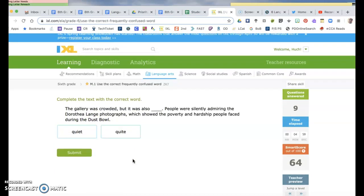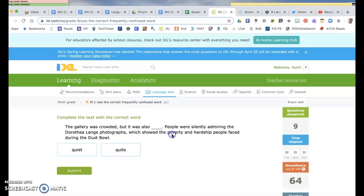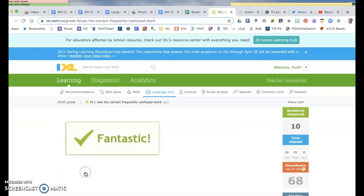The gallery was crowded, but it was also quiet or quite. People were silently admiring. So they want quiet. This one means quiet. With the E on the end, the E makes that I long. This means quiet. You know the difference between the two.